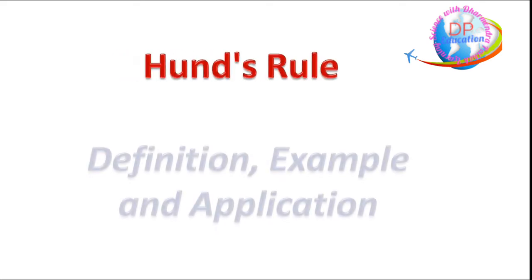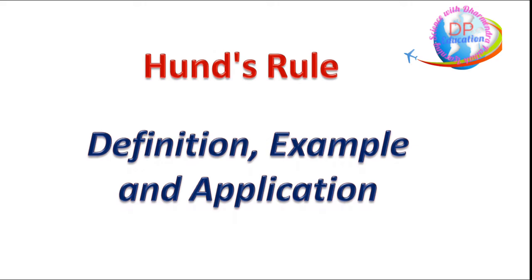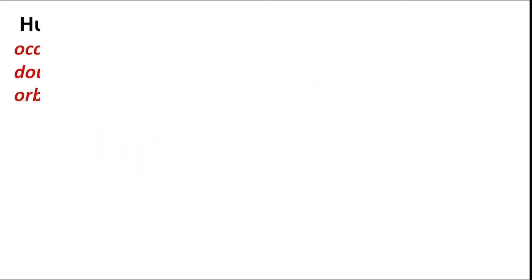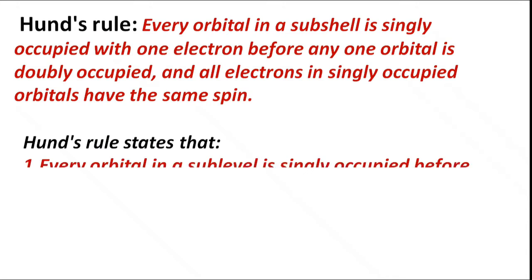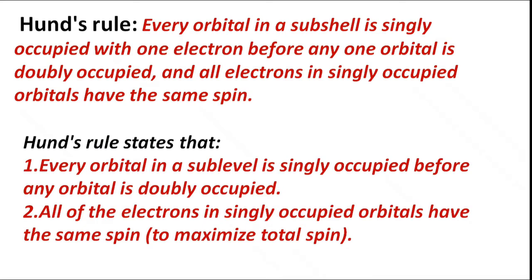Hund's rule definition, example, and application. Hund's rule states that every orbital in a sub-level is singly occupied with one electron before any one orbital is doubly occupied, and all electrons in singly occupied orbitals have the same spin — to maximize total spin.